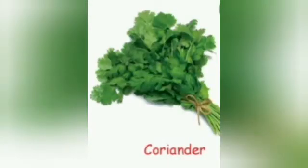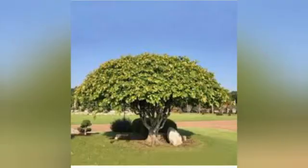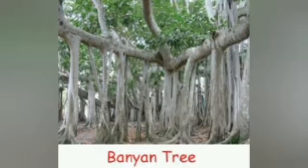Herbs such as coriander and mint have thin and weak stem. Trees such as peepal and banyan have very strong and thick stem called trunk. As trees grow older, their trunks grow wider.